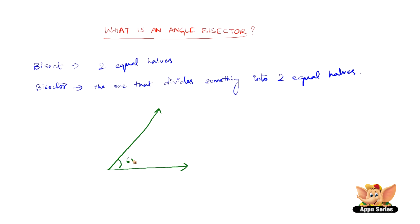So let us say this is 60 degrees. Let us name this angle AOB 60 degrees. Now what an angle bisector would do here is divide this 60 degrees into two equal halves and make it 30 degrees and 30 degrees. So this is called an angle bisector.